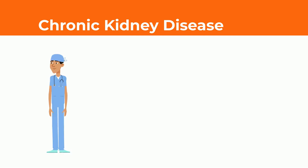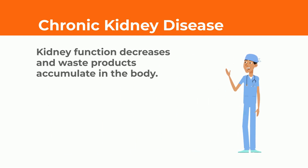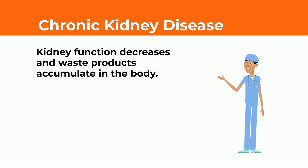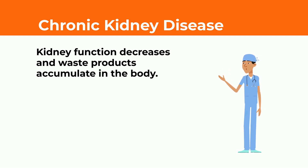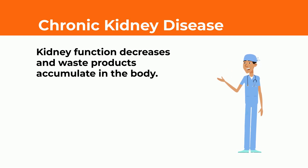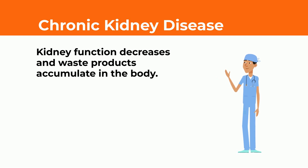In chronic kidney disease, our kidneys are damaged and are unable to filter blood the way they are supposed to. This results in the accumulation of waste in our bodies. It is referred to as chronic kidney disease because this damage can occur slowly over a long period of time.